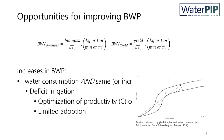In other words, deficit irrigation provides the necessary water for maximum water productivity, which is seen in point C in the figure.